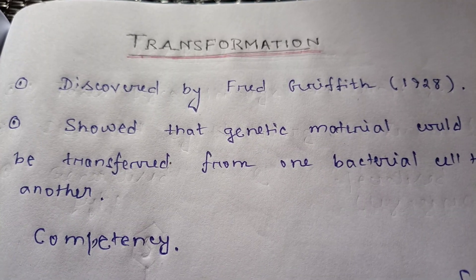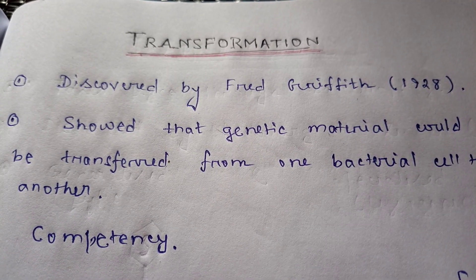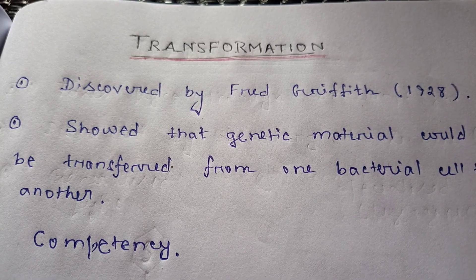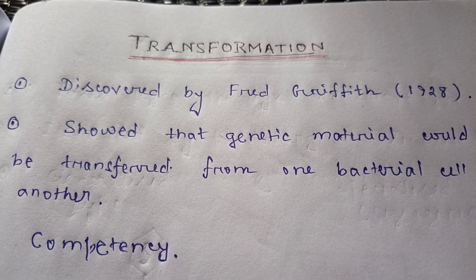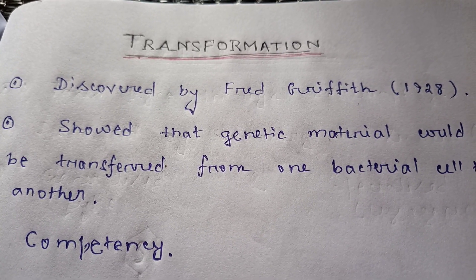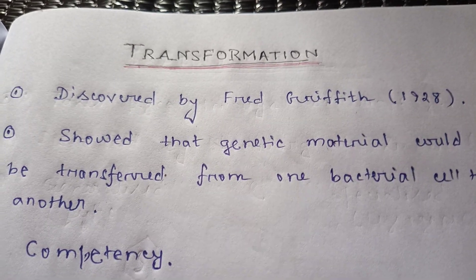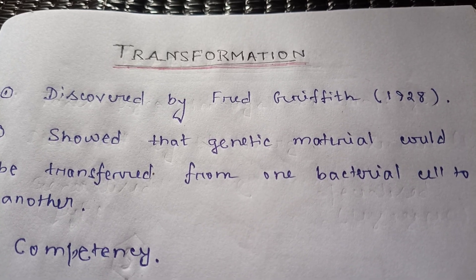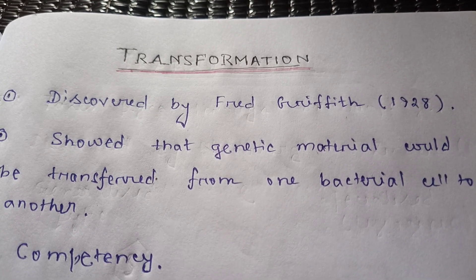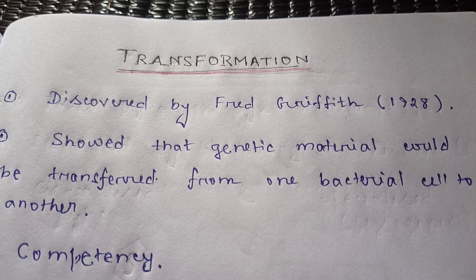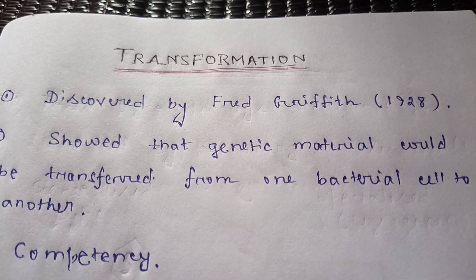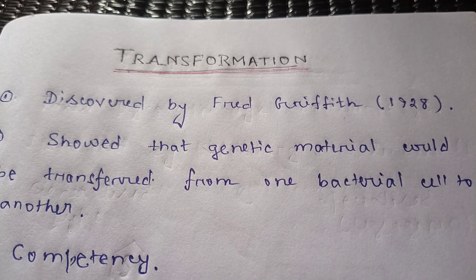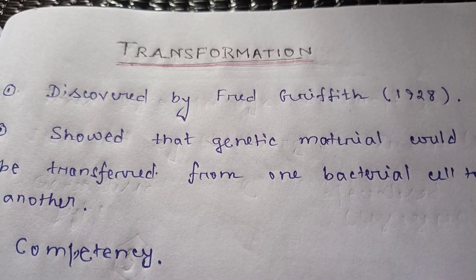Welcome to Bioswam with Friends. Today we learn about transformation. Transformation was the first horizontal gene transfer mechanism discovered in 1928 by Fred Griffith. It is the mechanism for uptake of a DNA molecule or its fragment from the medium and incorporation into the chromosome of the recipient bacteria.